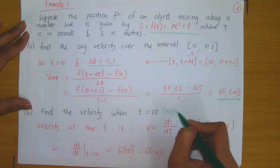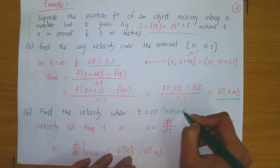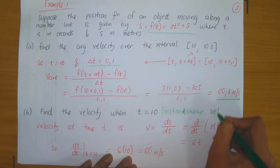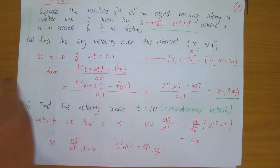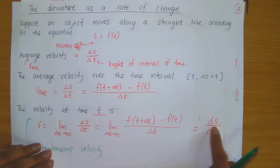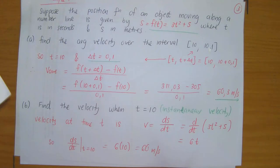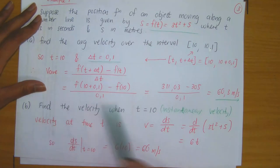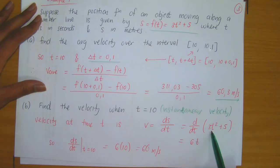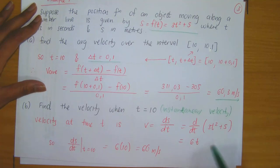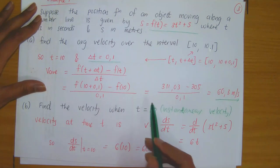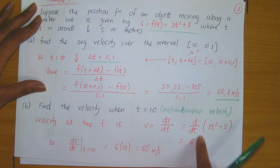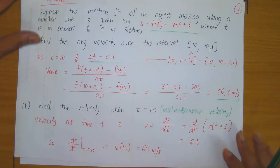If you want to find the velocity at a specific time, this is instantaneous velocity. As we saw on the previous slide, instantaneous velocity is simply equal to the derivative of the position function with respect to T. Taking the derivative of 3T squared plus 5: the derivative of 3T squared is 6T, and the derivative of 5 is 0. So if we want to evaluate what's happening at T equals 10, substituting 10 into the velocity formula gives velocity at T equals 10 as 60 meters per second.